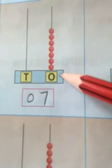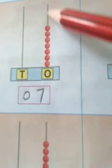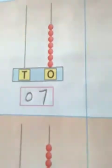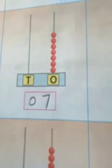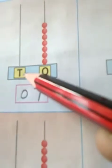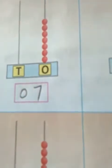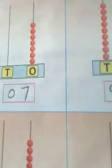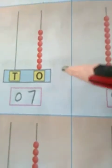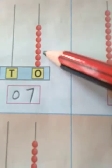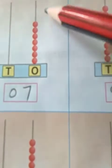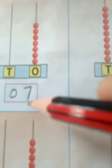Now, in the 1's place we have beads, but in the 10's place we don't have beads. So in the 10's place we can write 0. And in the 1's place we can count the beads: 1, 2, 3, 4, 5, 6, 7. So we can write here 7.